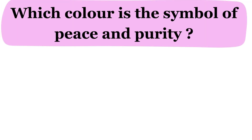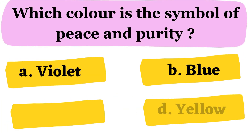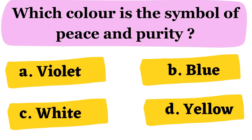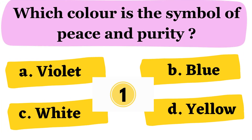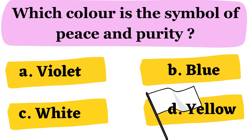Next question. Which color is the symbol of peace and purity? A. Violet B. Blue C. White D. Yellow. The correct answer is option C. White.